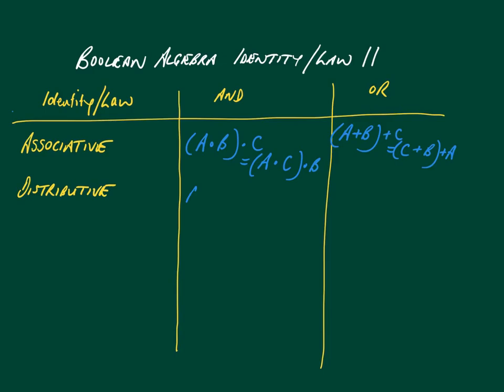With distributive, it's different from normal maths, because this is where we combine things. a OR (b AND c) expands out to be (a OR b) AND (a OR c). Another example is a AND (b OR c), which equals (a AND b) OR (a AND c).